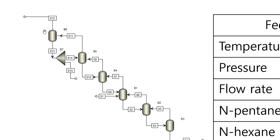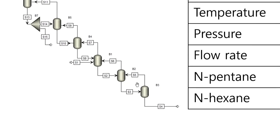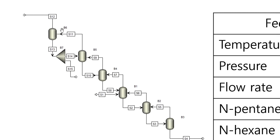S11 goes to B6, and S12 is the vapor while S13 is split — one part becomes the top product and the other stream goes back to B5. This represents the condenser. If you want complete liquid, S12 will be zero and all the liquid goes to S13, which is split as required, with S14 going back to the stage.